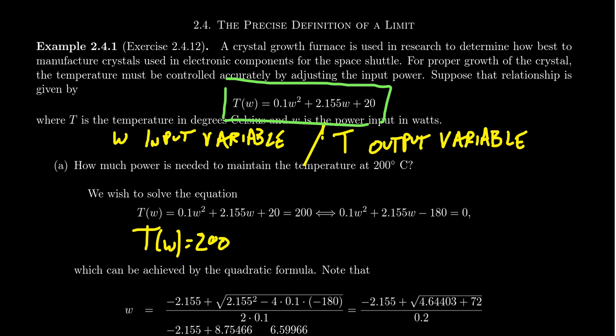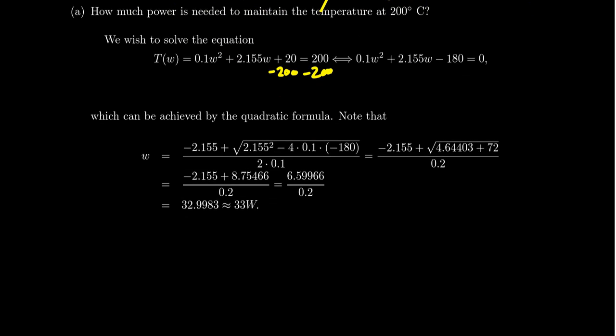Given that we have this function relationship, if we want the temperature to be 200 degrees, essentially we're trying to solve the equation T(W) = 200 degrees. Then we have to solve the equation 0.1W² + 2.15W + 20 = 200. If we subtract 200 from both sides of the equation, you get 20 - 200, which would be -180. We then have this quadratic equation in standard form. Given the decimals going on here, I think probably the best approach is just going to be the quadratic formula.